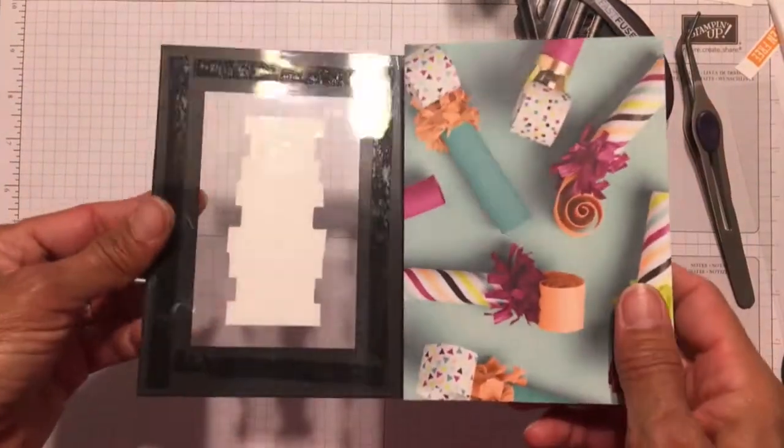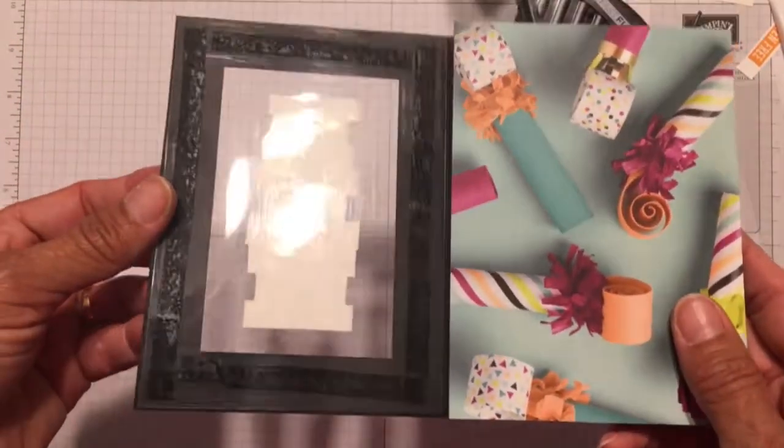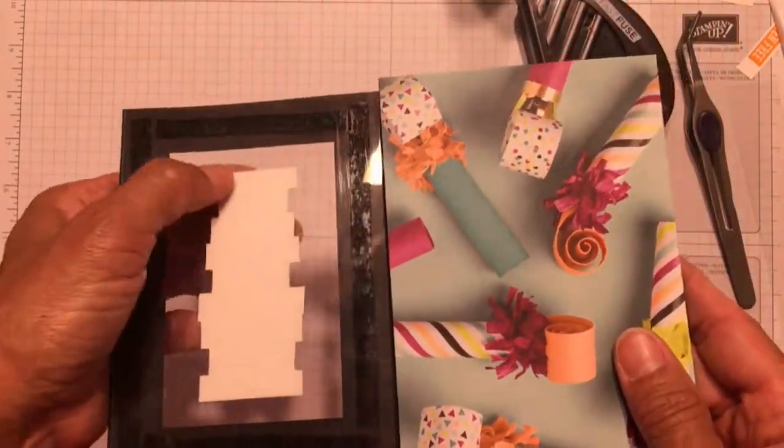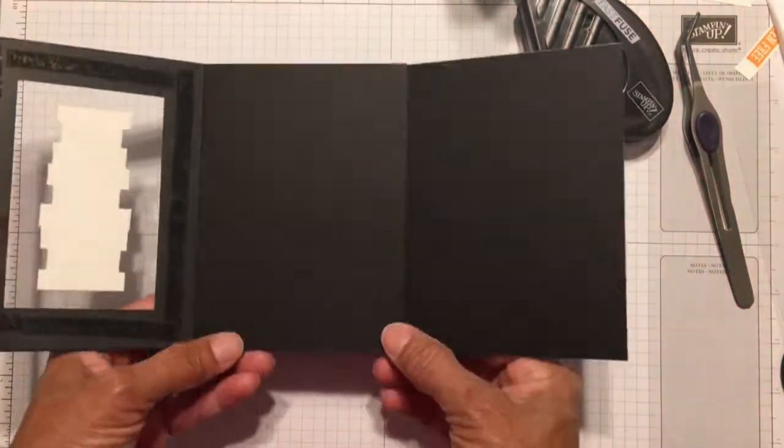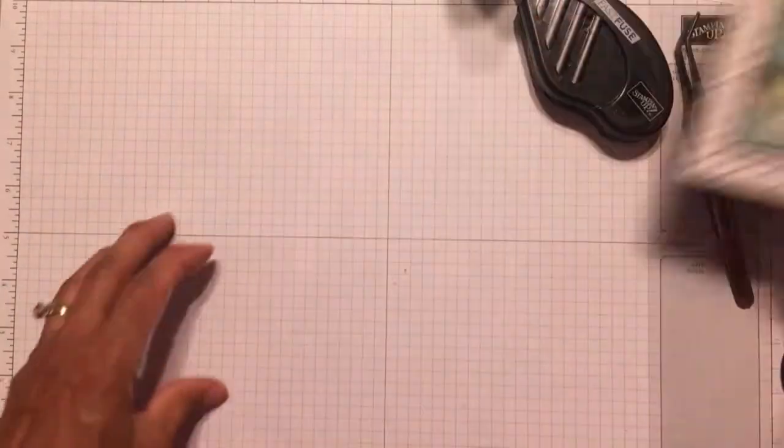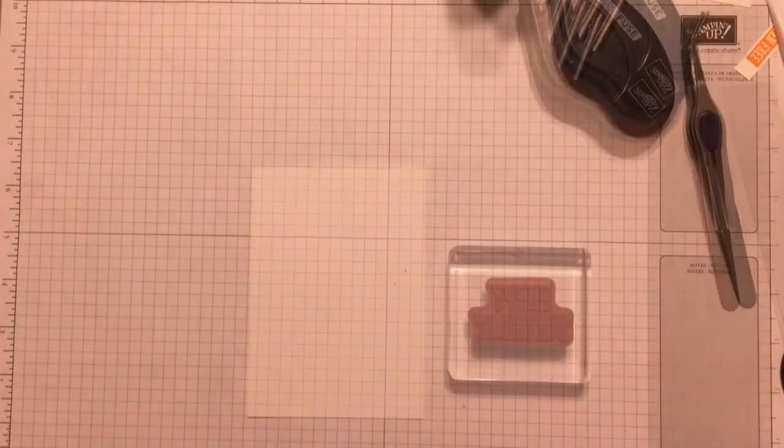Here's a close-up of the inside of the card. And if that bothers you, you could cut another frame like the one on the front of the card and put it on the inside of the card. Or as I mentioned earlier, sandwich the acetate in between the two layers on the front of the card.